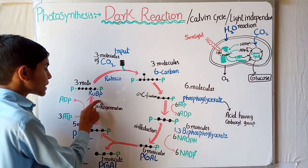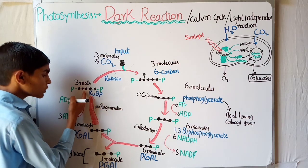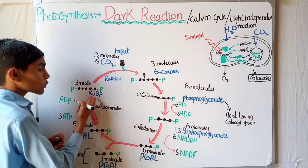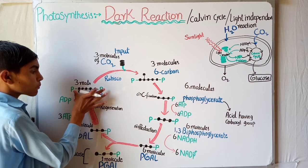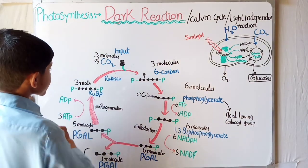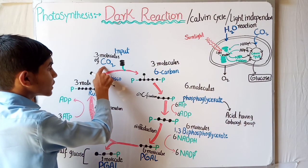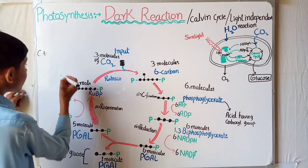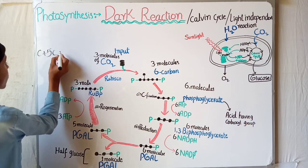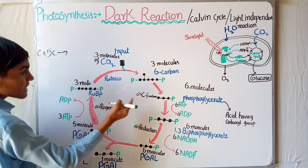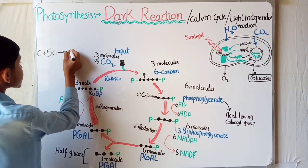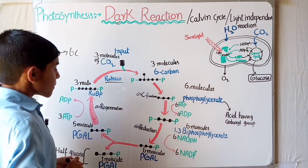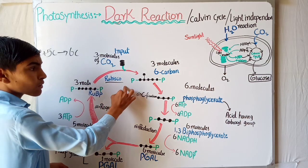In the stroma there is a molecule called RuBP — ribulose bisphosphate — which has five carbons. I have shown the carbons in black. These carbons are present from the beginning in the stroma. RuBP is a bisphosphate, phosphorylated at both ends. When CO2 enters, one carbon from CO2 is added to one molecule of RuBP which has five carbons, giving us a six-carbon compound. This reaction is carried out by the enzyme RuBisCO.